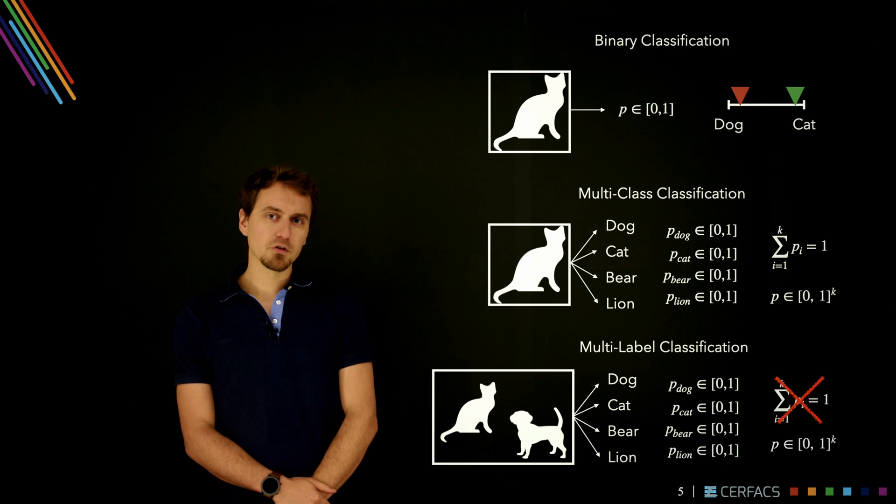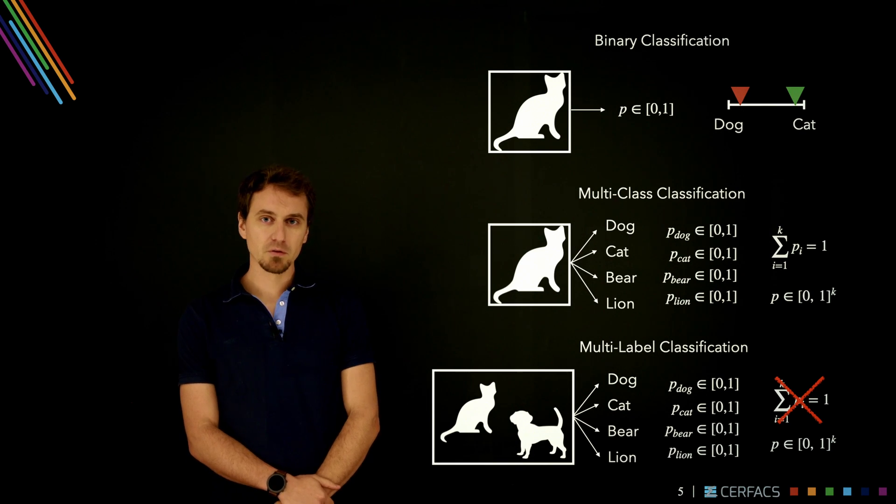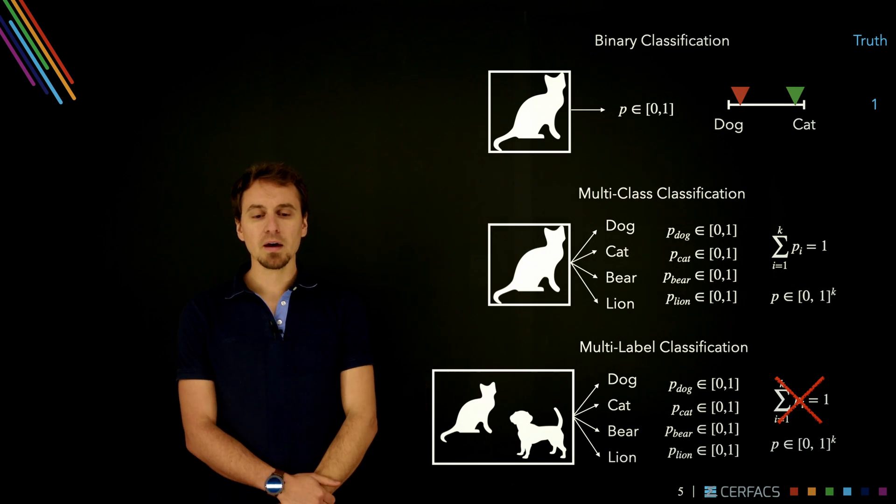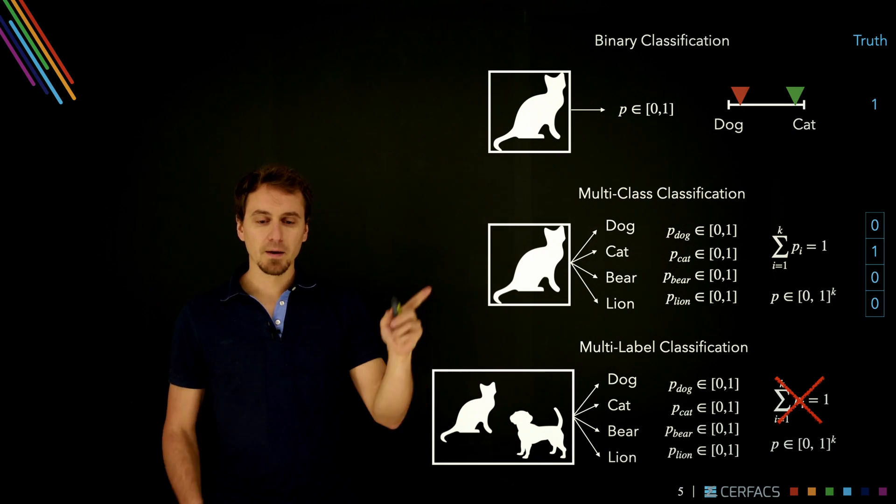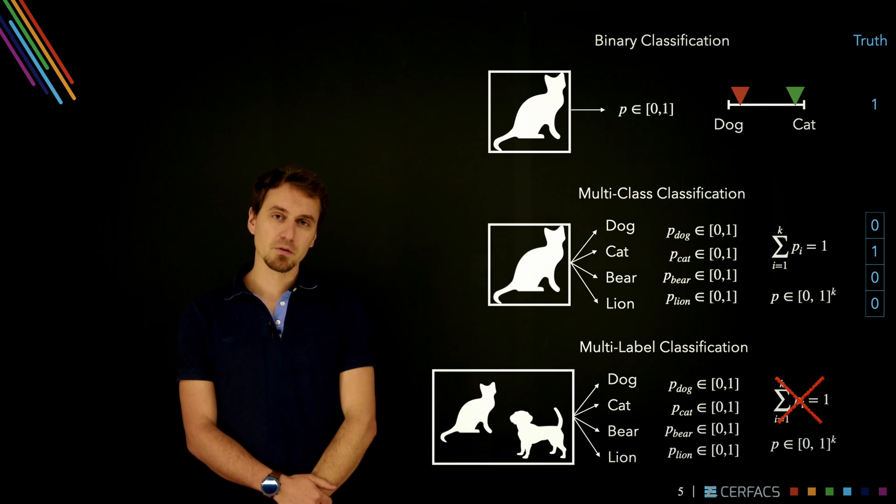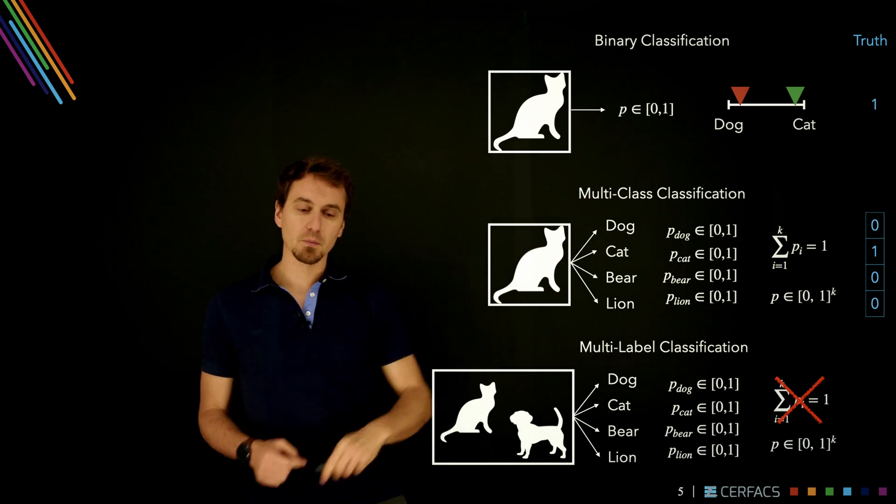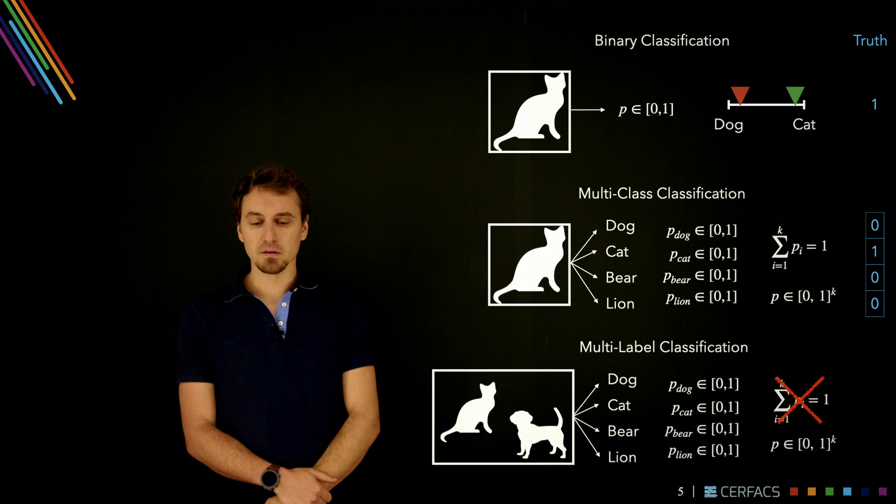Now if we want to build functions that produce these classifications, usually with neural networks, what we're going to need is labels. We're going to give the label 1 for this is a cat, this is a truth, and that's what we're going to train against. In the middle, we're going to give what's called a one-hot encoding, a vector of dimension k which will have a 1 for the class that we want for cat and 0 for all the other classes.